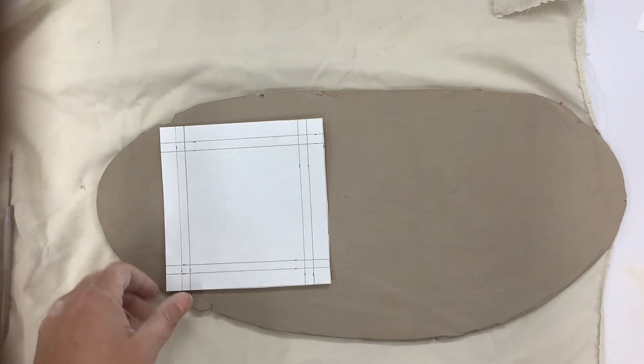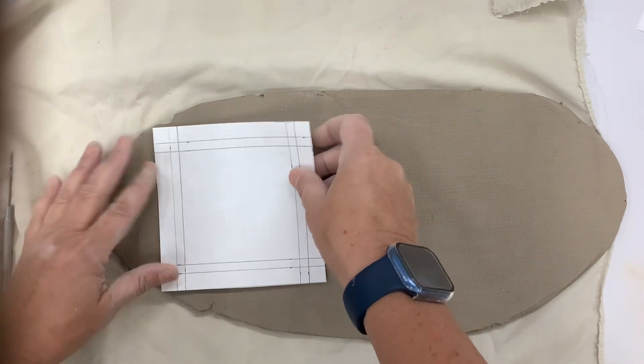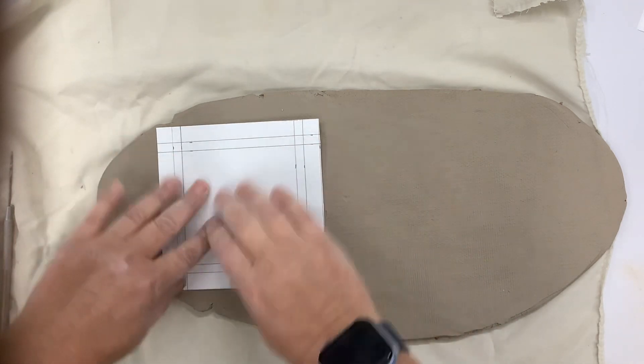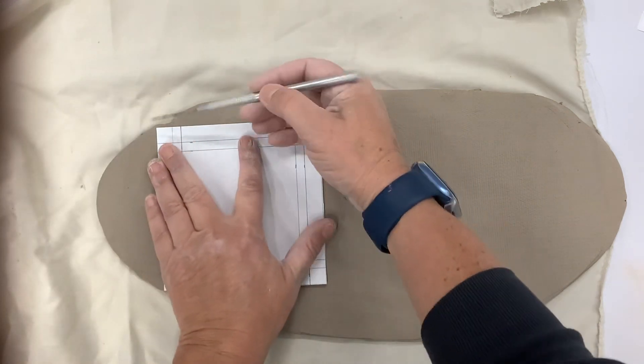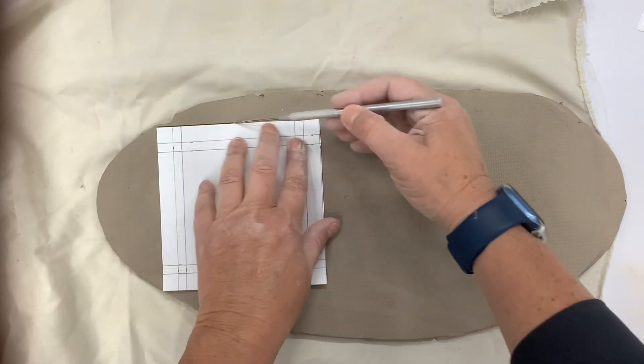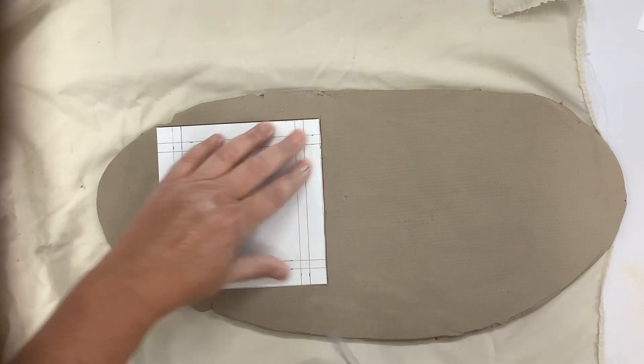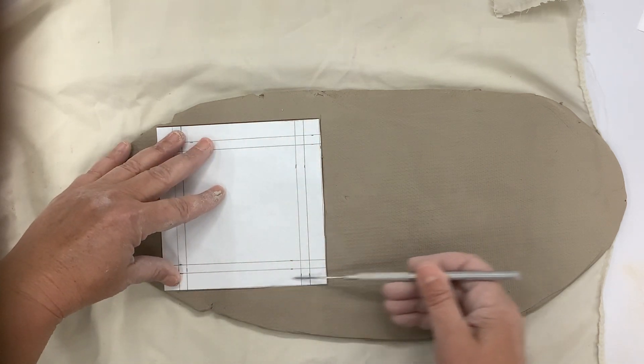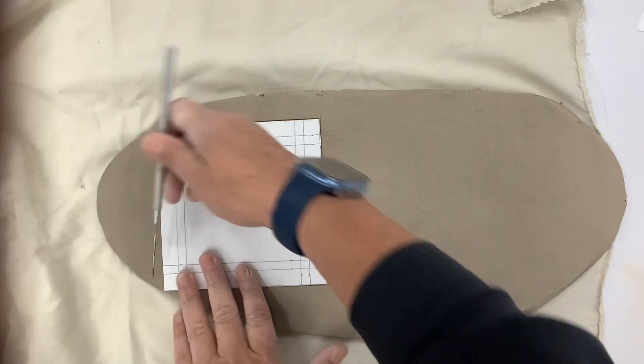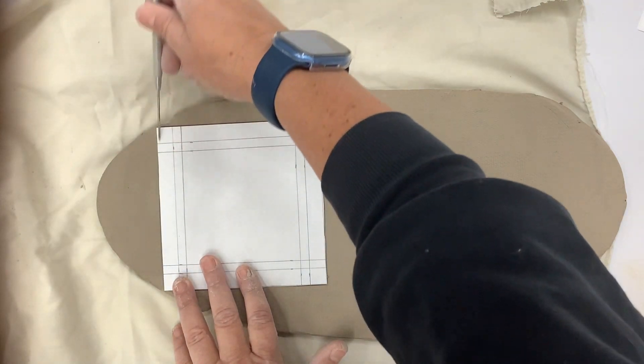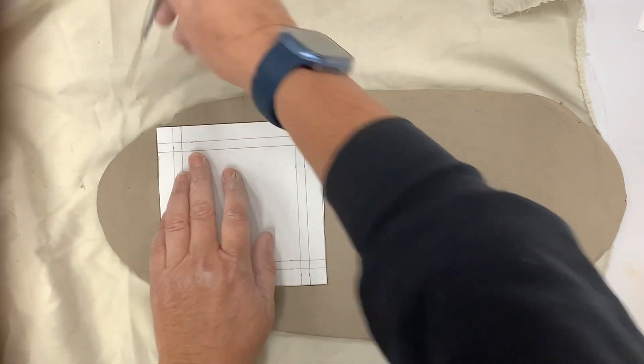What I'm going to do is put this as far left as I can, and then I'm going to use my needle and trace it all the way around. What I'm also going to do is trace the inside of these lines.